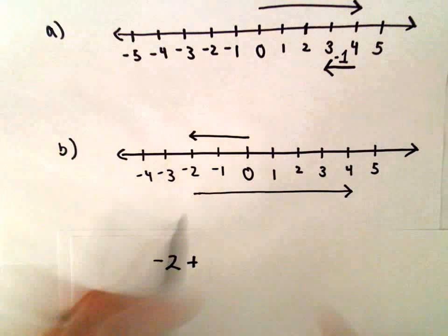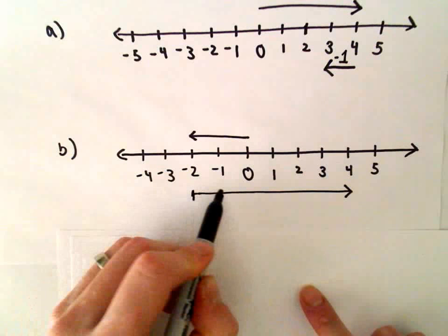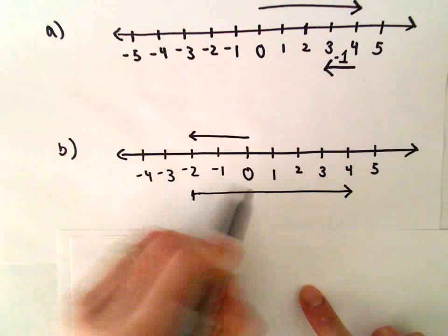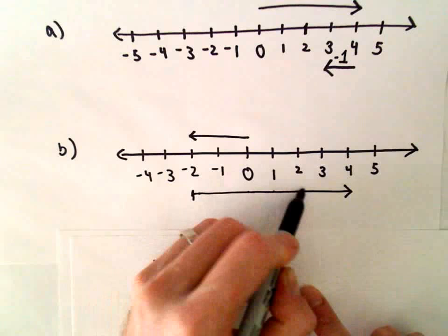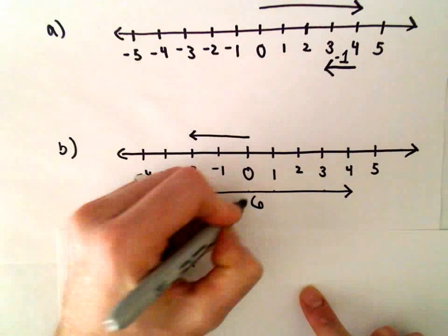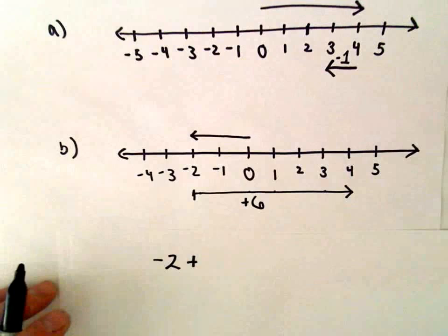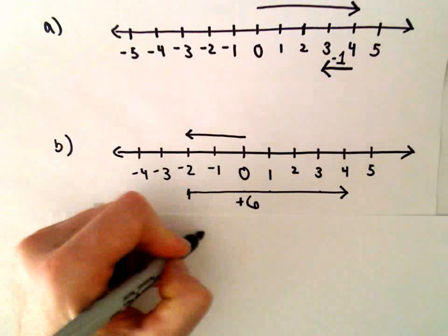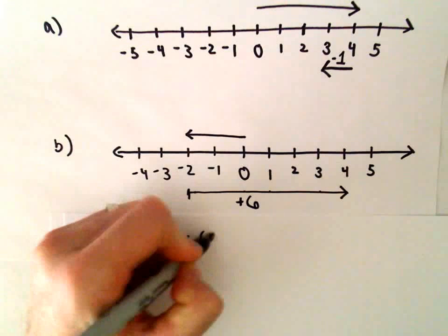And then we're going to add to that. Let's count. We're starting here and going over: one unit, two units, three units, four units, five units, six units. We're adding six units by moving to the right. So we have negative two plus positive six.